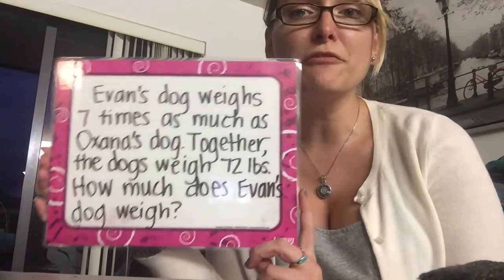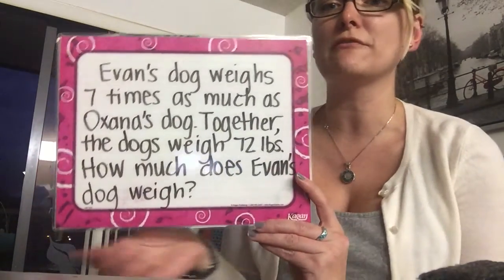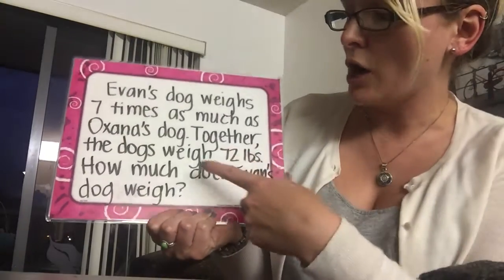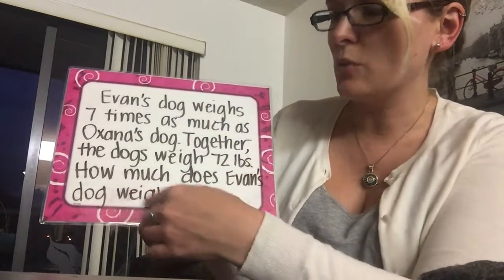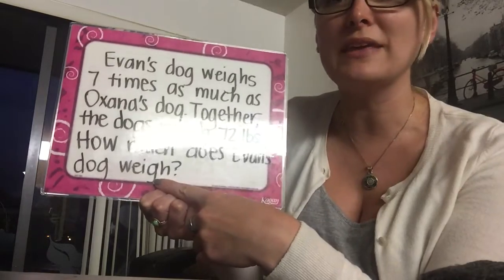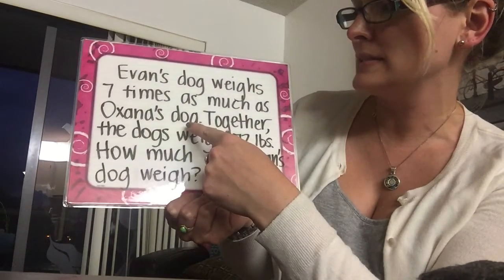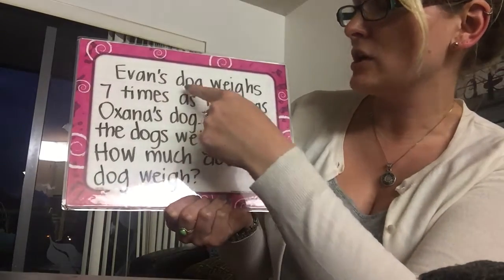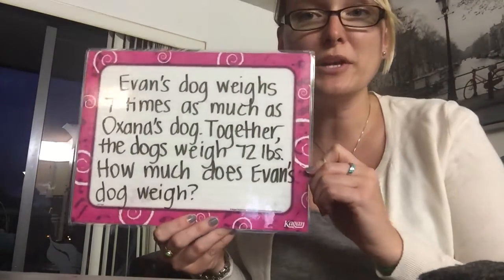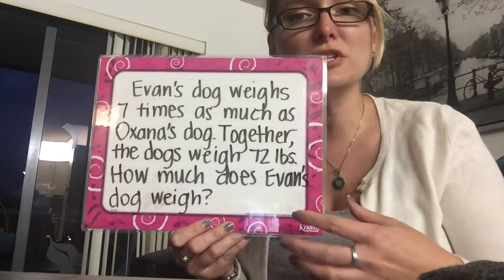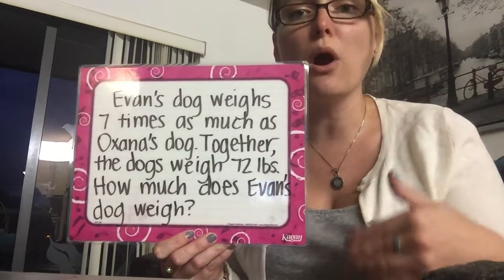With a word problem like this, the first thing you need to do is pull out the important information. Our question is: how much does Evan's dog weigh? That's what we're trying to figure out in the end. But right now, we don't know how much Oksana's dog weighs, and the only thing we know about Evan's dog is that it is seven times as much. We have a lot of information to figure out, so the best thing to do first is draw a model.